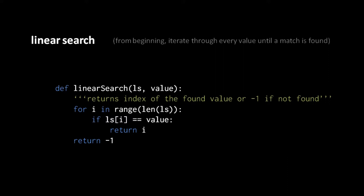In a linear search, we simply start at the beginning and iterate through every value, comparing those values against what we're looking for until we find a match. Here is a function in Python which performs a linear search on a list. The first parameter takes in the list itself, and the second parameter is the value we're searching for. What we want returned is the index — the location of the value in the list — an integer from 0 up to, but not including, the length of the list. We search from the start, so if matching values are located at multiple places in the list, we get back the index of the first occurrence.